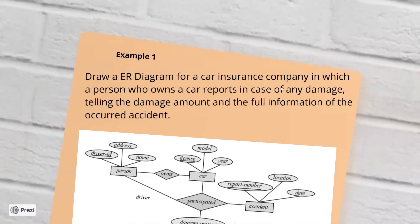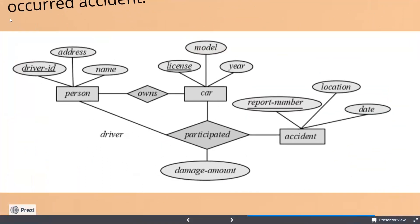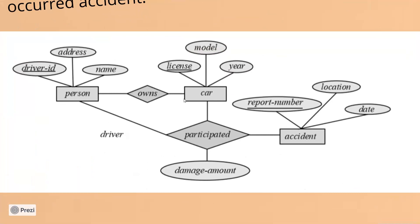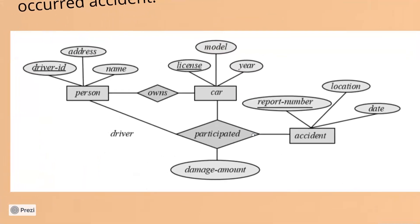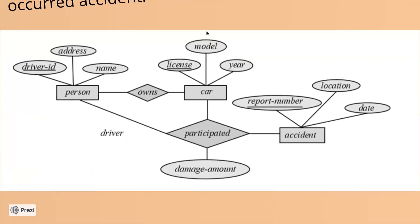This is the ER diagram. The person owns the car — that is the person-car relationship. The car has attributes such as license, model, year, and accident-related fields.